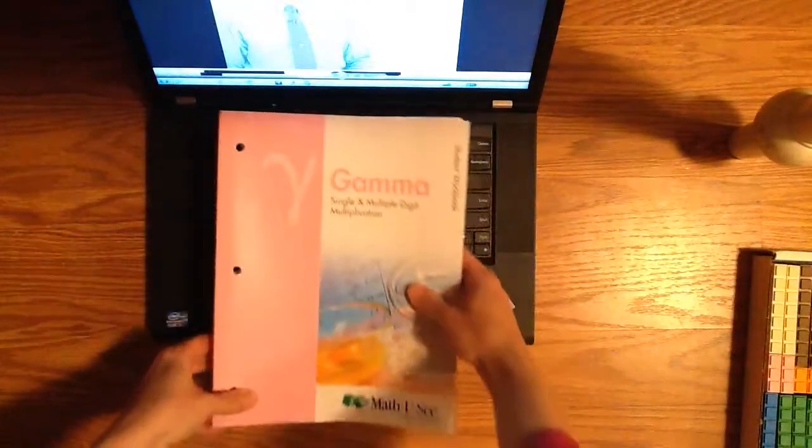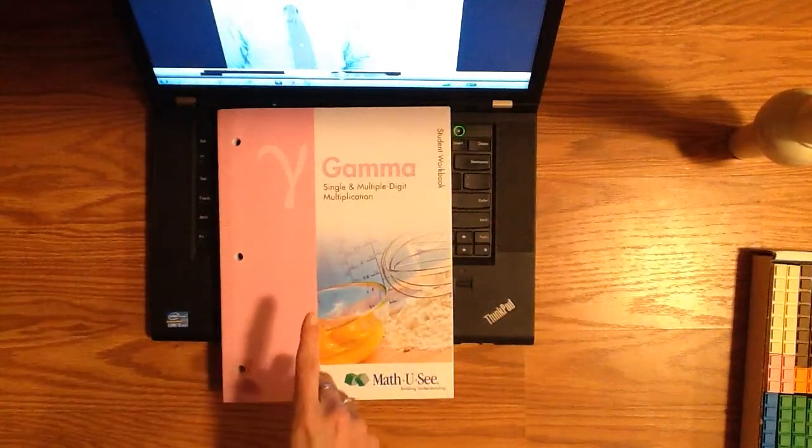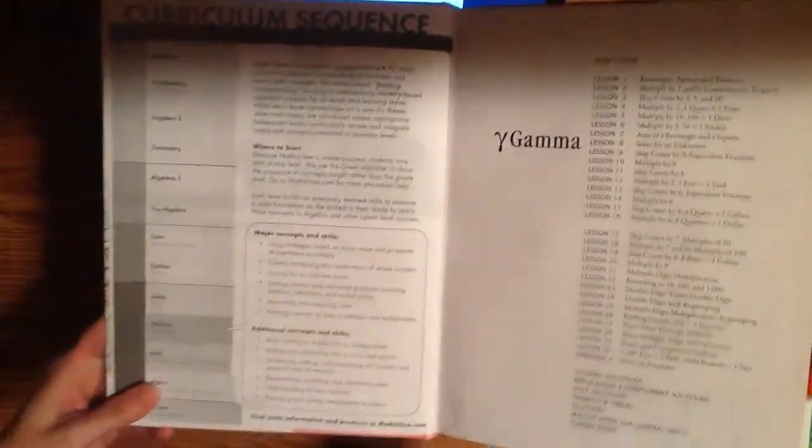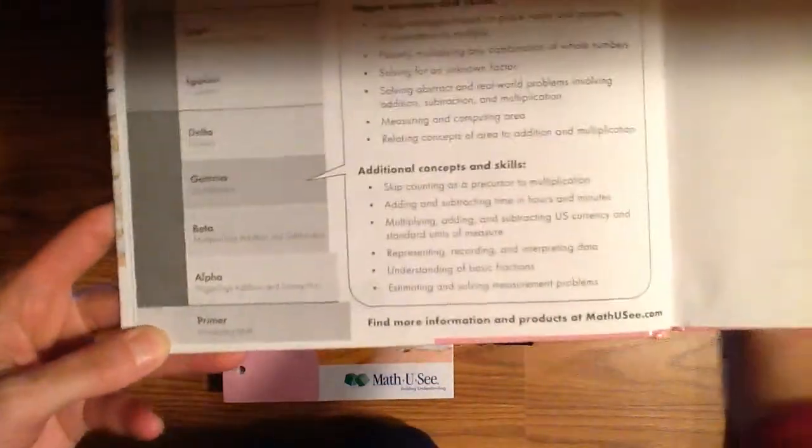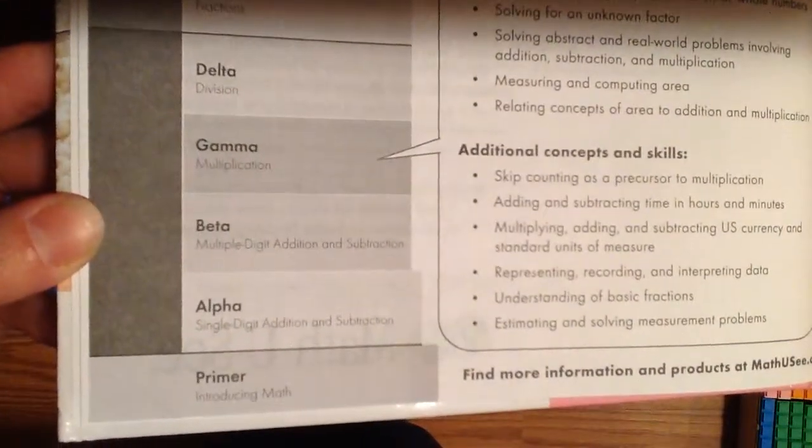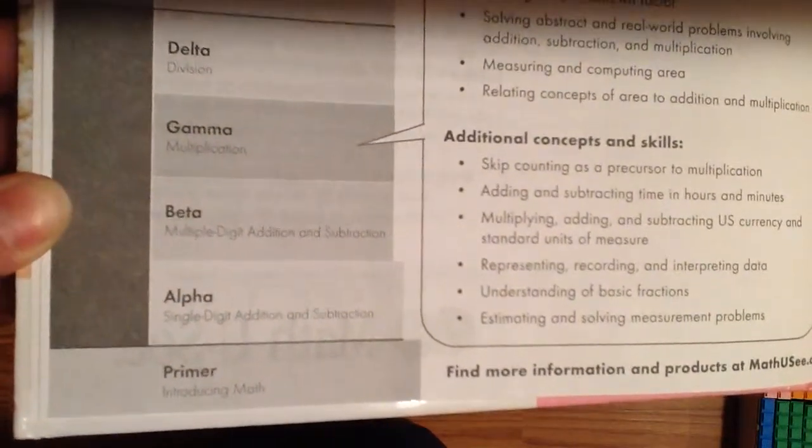So this program really stresses the importance of mastering one operation before moving to the next. So it's not broken up into grade levels. They use the Greek alphabet to show which level that you're in, and each level is focusing on a certain operation. So you'll see that the Alpha program, your main focus will be single digit addition and subtraction.